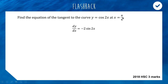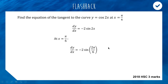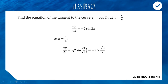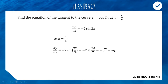Substituting x = π/6 gives us the gradient of the tangent at this point. We get 2 times π/6 which is π/3, and sine of π/3 is sine 60°, which is √3/2. So we're doing negative 2 times √3/2, which gives us negative √3, and that is our gradient.